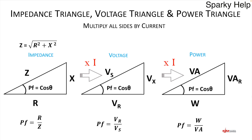We can also apply Pythagoras to all of these. Z equals the square root of R squared plus X squared — which could be XL or XC, or both (remembering one subtracts from the other). Similarly, VS equals the square root of VR squared plus VX squared. And the power one follows the same pattern.